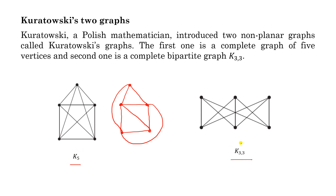Similarly you can check for K33. The important property of these two graphs is that K5 is a non-planar graph with the minimum number of vertices, and K33 is a non-planar graph with the minimum number of edges. For a given graph, to check whether it is planar, if you can prove that the given graph is isomorphic to either K5 or K33, then the graph is also a non-planar graph.